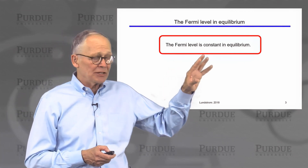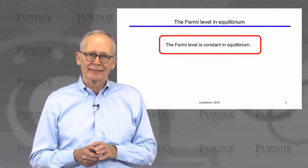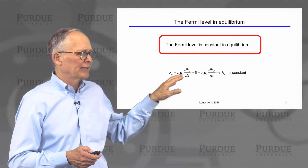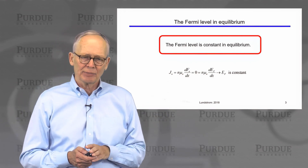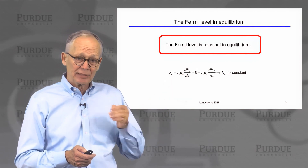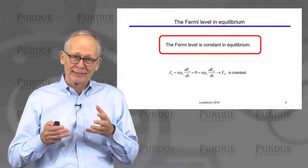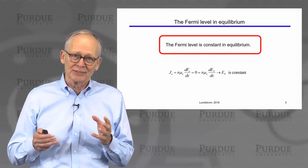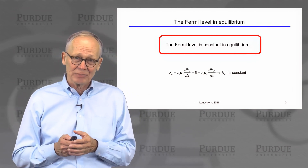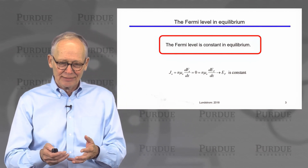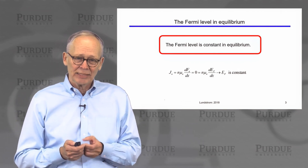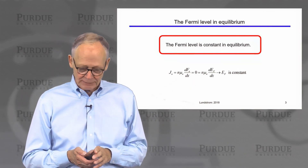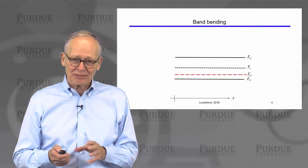Another thing I'd like to remind you of is the fact that in equilibrium, the Fermi level is constant — it's independent of position. One way to see that is, if you remember, we often write the current as proportional to the gradient of the quasi-Fermi level. In equilibrium, the quasi-Fermi level is the Fermi level, so the current would be the gradient of the Fermi level. But the current is zero in equilibrium — we can't extract energy out of a semiconductor device just sitting there. So the current equation implies that the Fermi level must be independent of position. That's a very important fact to remember.